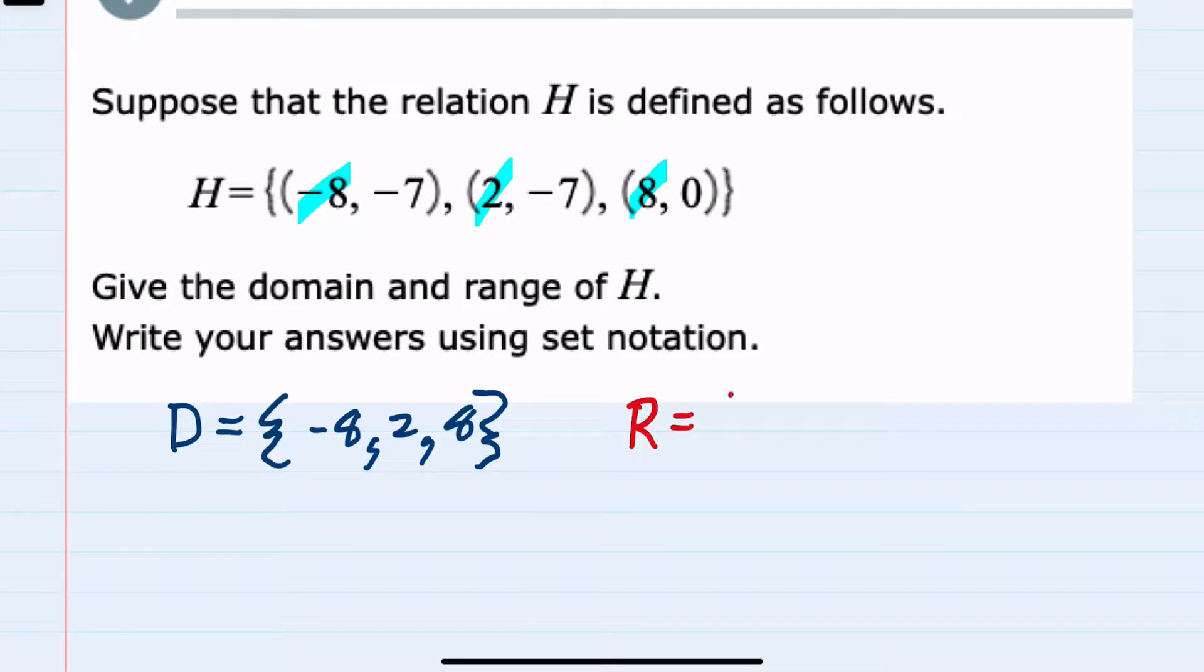That would be the set of numbers that are the output or the y values in each of these ordered pairs. And the list of those numbers is minus 7, and we have minus 7 twice, but when we're listing the domain and range we don't have to represent duplicates of the same number.